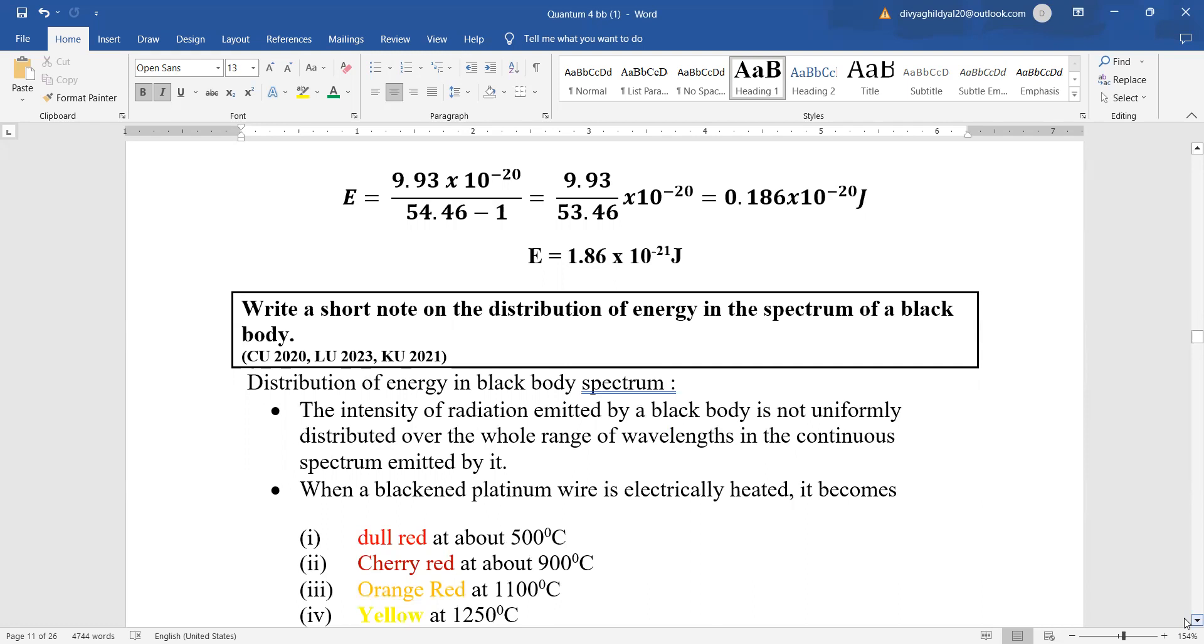Now black body, the moment you heat a black body it starts emitting a radiation spectra and the spectral variations come as per wavelength. For small wavelength the different aspect will be followed and for the larger ones a different aspect will be followed. Now in your exam in the long questions you are asked to write a short note on the distribution of energy in the spectrum of a black body. So the intensity of radiation that is emitted in the black body is not uniformly distributed over the whole range of wavelengths. This is a very important point.